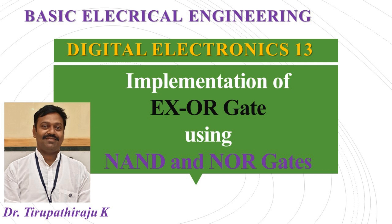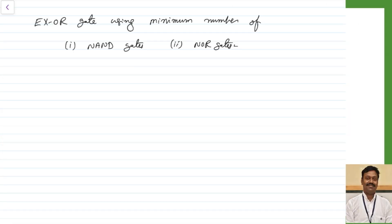Good morning all. Let us see how to implement the XOR gate using the minimum number of NAND and NOR gates. In our previous class we have already seen how to implement the basic gates using NAND and NOR gates because they are called the universal gates. I told you that after discussing Boolean algebra I would discuss the implementation of the exclusive OR gate, so now we are going to discuss this in today's class.